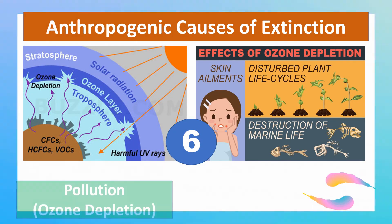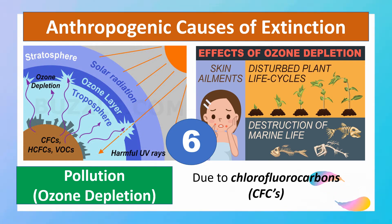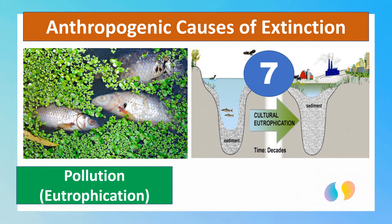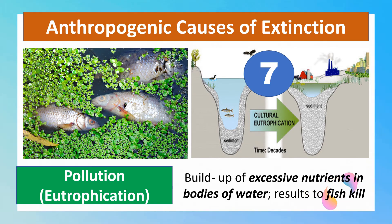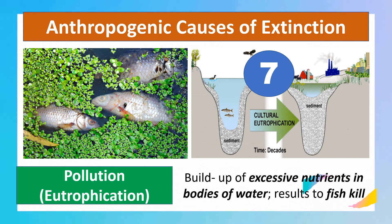Another type of pollution is the depletion of the ozone layer, caused by chlorofluorocarbons (CFCs) found in refrigerants such as air conditioning units and refrigerators. And lastly, there is eutrophication — the excessive buildup of nutrients within bodies of water. Because of this, the amount of dissolved oxygen lessens, and when there is less dissolved oxygen in the water, most aquatic species tend to die, resulting in a fish kill.